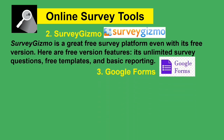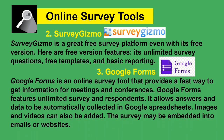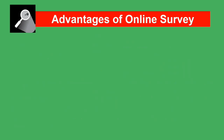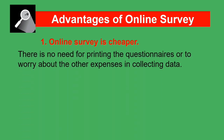Third, Google Forms. Google Forms is an online survey tool that provides a fast way to get information for meetings and conferences. Its features include unlimited surveys and respondents, automatic data collection into Google Spreadsheets, the ability to add images and pages, and the option to embed the survey into emails or websites.